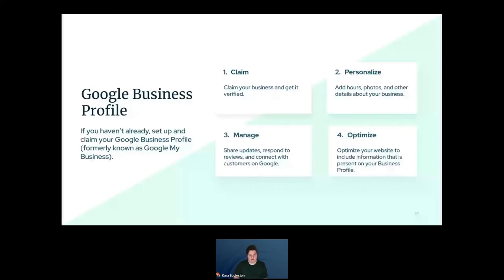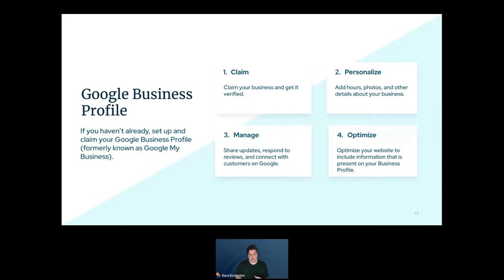If you haven't already, claim your business and get it verified — set up your Google Business Profile. Sometimes if you haven't set one up, Google might still have created a profile for you by crawling sites like Yelp. If that happens, search for your business name and if a profile pops up, there should be a link that says 'claim this business.' Once your business is claimed, you'll probably have to verify it. They'll usually send a postcard with a code to the business address you put in, which you then enter on the website to get verified.